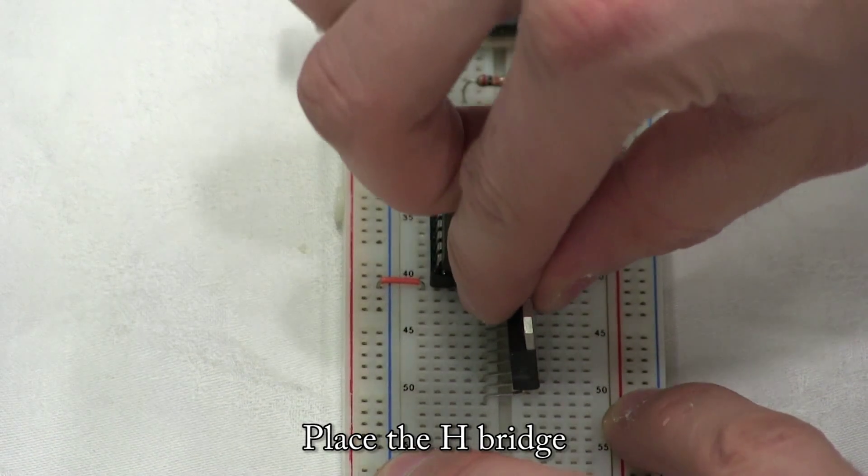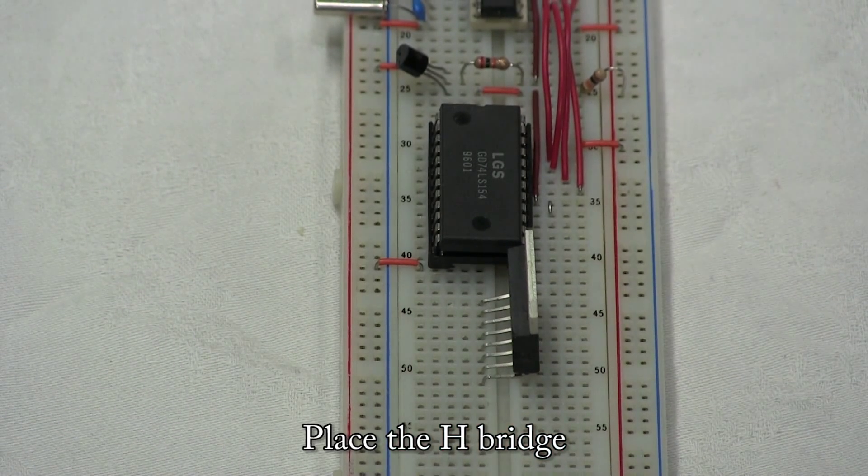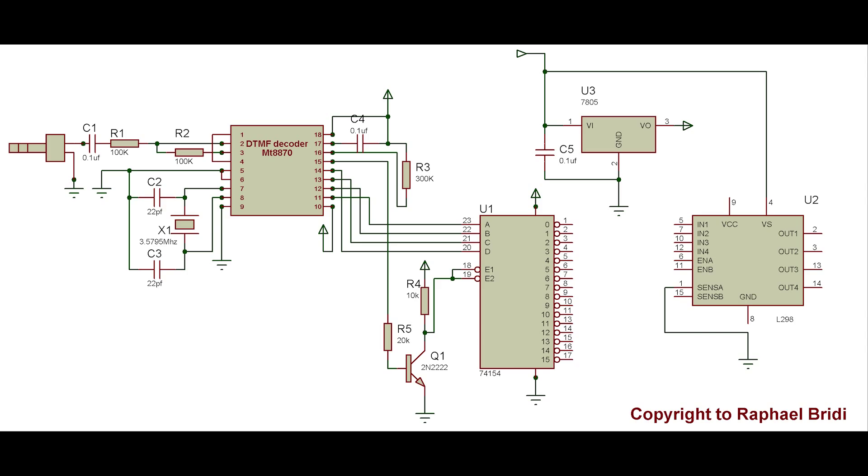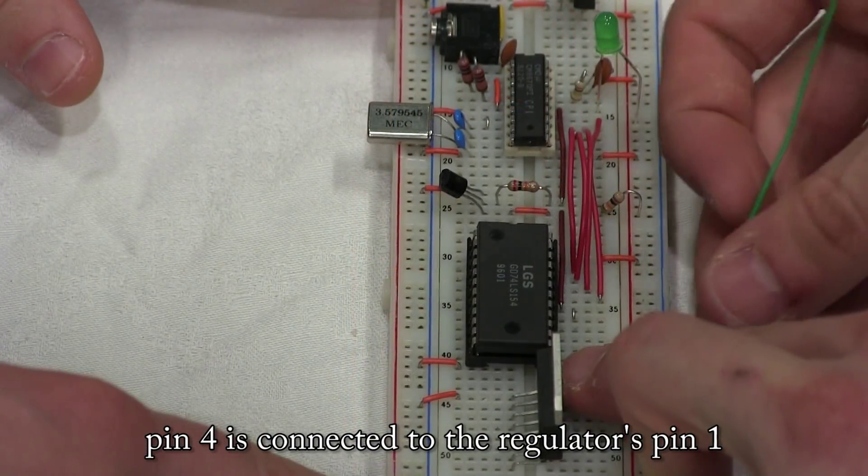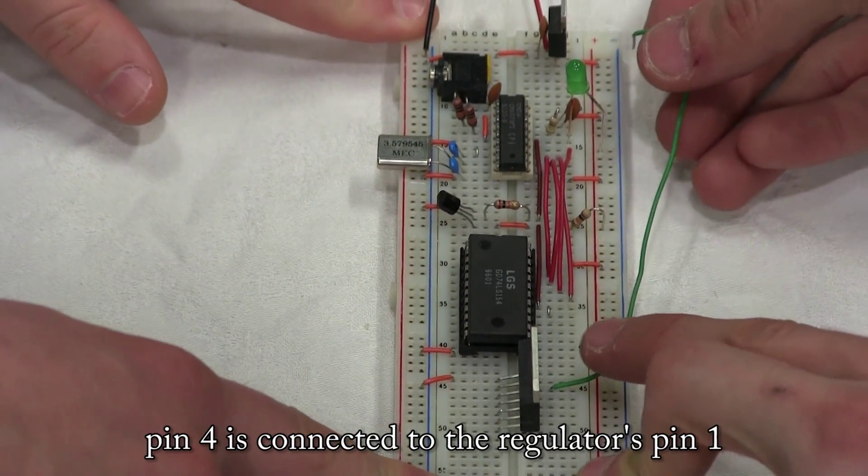Place the H-bridge. Pin 1 is grounded. Pin 4 is connected to the regulator's pin 1.